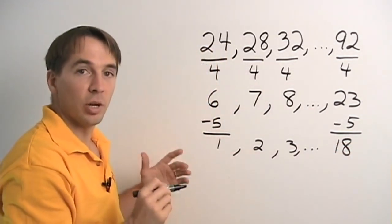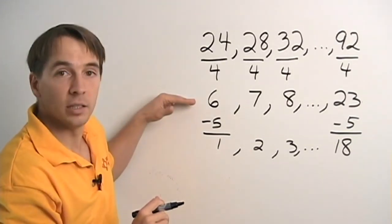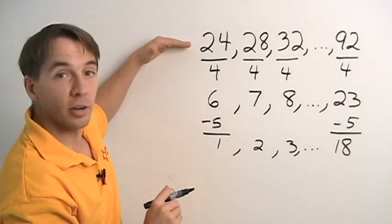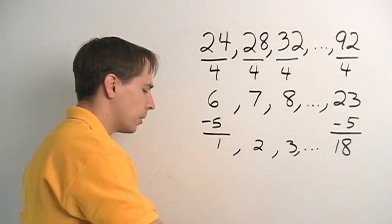And on up to 23 minus 5 is 18. And nothing we did here changed the number of numbers that are in the list. There are 18 numbers in this list, so there are 18 numbers in this list. And that means there are 18 numbers in this list. So, now we know how to count by 4's.